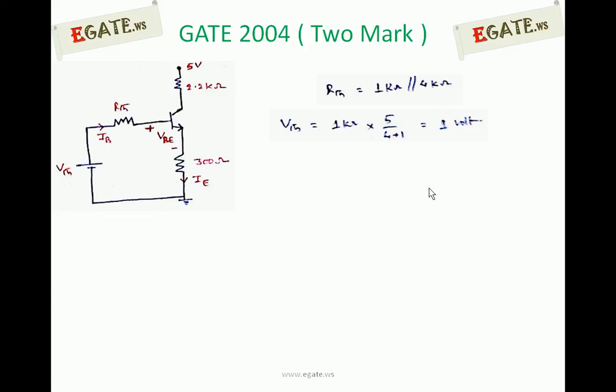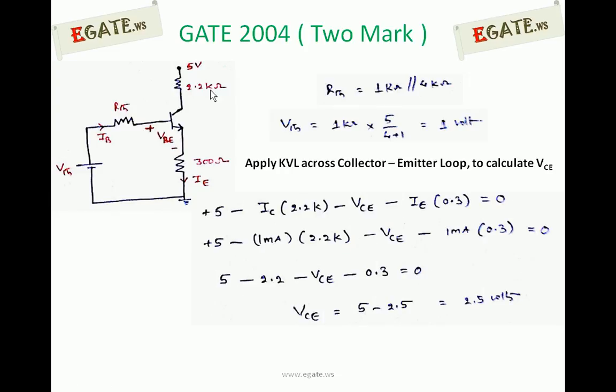Next, to calculate VCE, apply KVL across the collector-emitter loop. This will be consisting of 5V minus 2.2 times IC minus VCE minus IE times 300Ω. This is KVL for the collector-emitter loop. From this one, substitute the known values: plus 5 minus IC is 1mA and IE is also 1mA. The unknown parameter is only VCE. That VCE can be solved, and this will be equal to 2.5V.